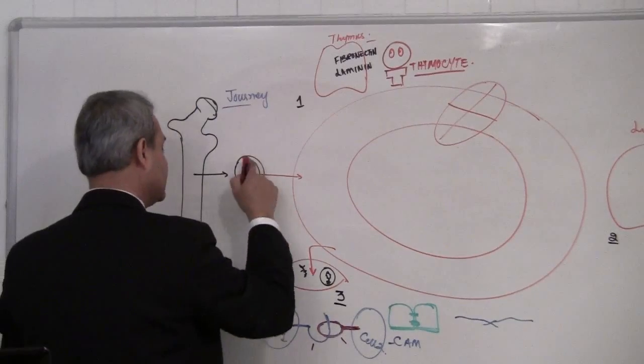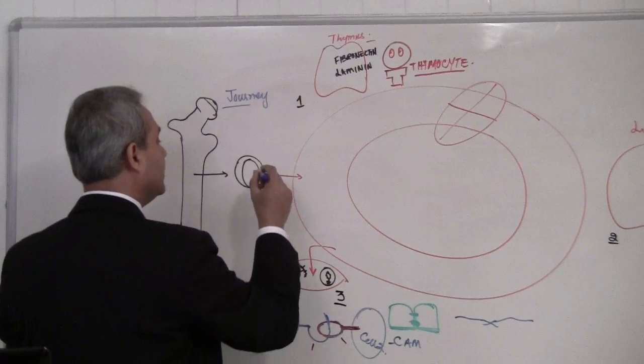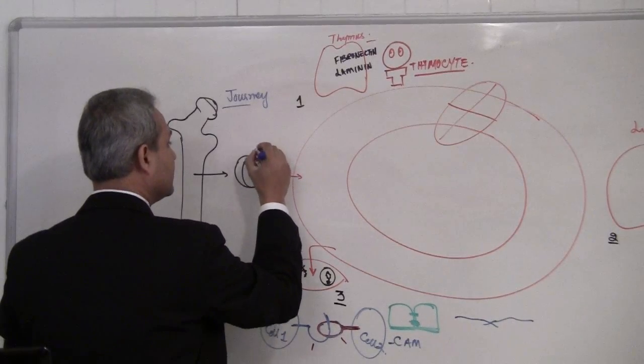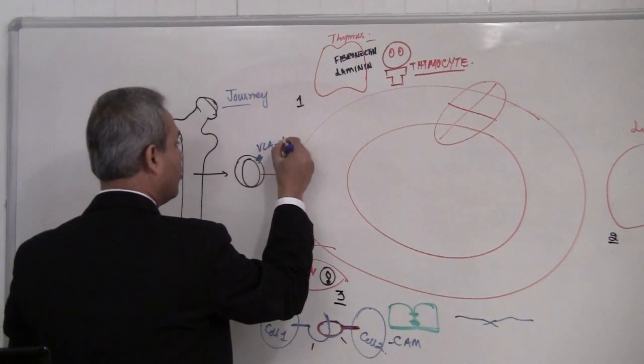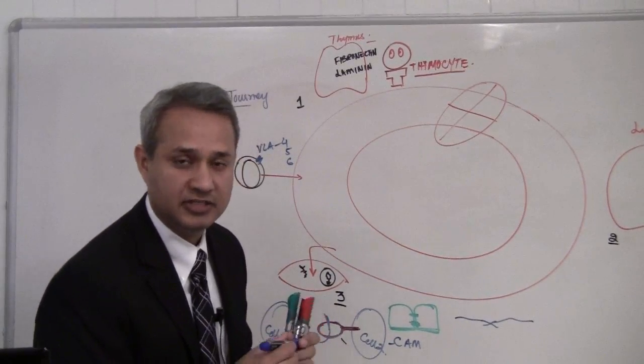This naive, this T cell, I do not want to call it naive. This T cell, this thymocyte expresses VLA 4, 5 and 6, very late antigen 4, 5 and 6.